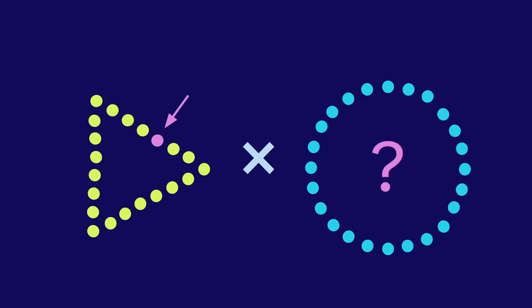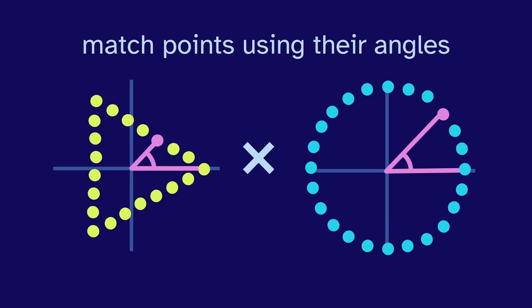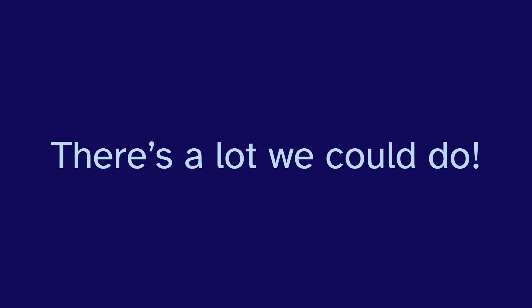I decided to match points using their angles. So this point on the triangle combines with this point on the circle, since they are the same angle from the x-axis. So now that we can match the points, we can multiply shapes, or add them, or subtract them. There's a lot we could do.